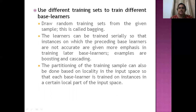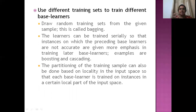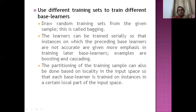Another method is to use different training sets. From the input data set, we can use different training sets for different base learners. We can pick random samples from the original data set. Each learner can be trained one after the other, so the instances on which the preceding base learner had difficulty are emphasized in the next. Combining learners trained this way gives better accuracy.